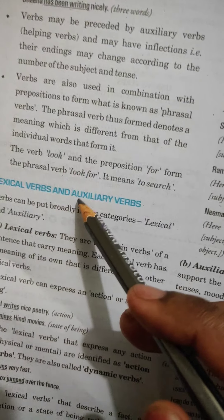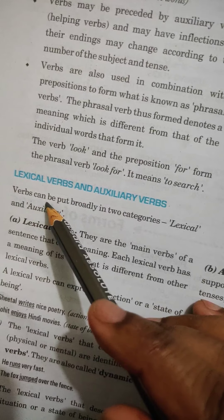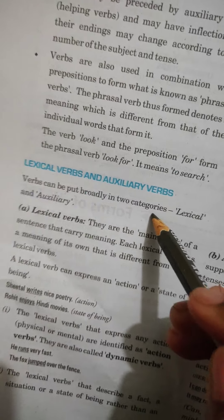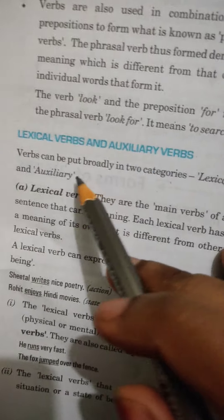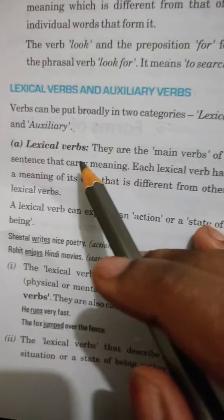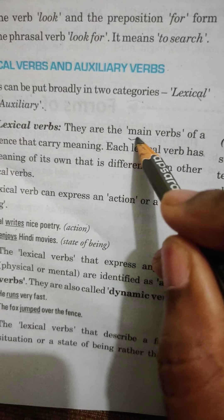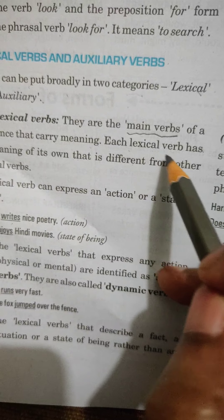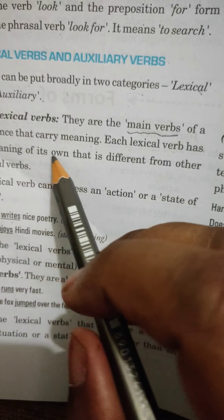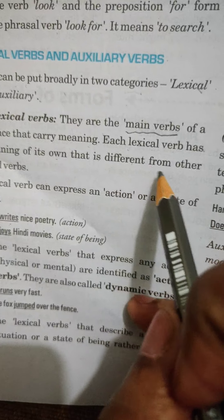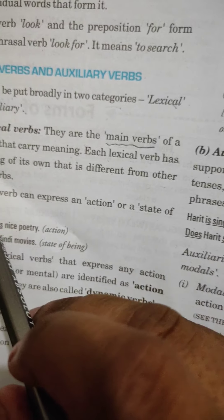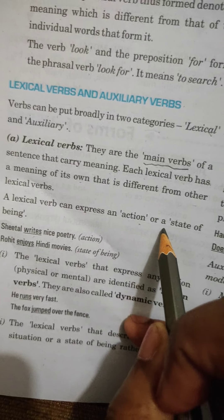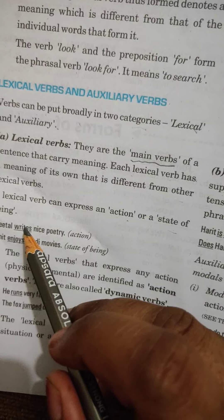Whether it is acting as a main verb, whether it is acting as a helping verb and so on those details we will learn. Let us talk about lexical verbs and auxiliary verbs. Verbs can be put broadly into two categories, lexical and auxiliary. Lexical verbs are the main verbs of a sentence that carry meaning. Each lexical verb has a meaning of its own that is different from the other lexical verbs.